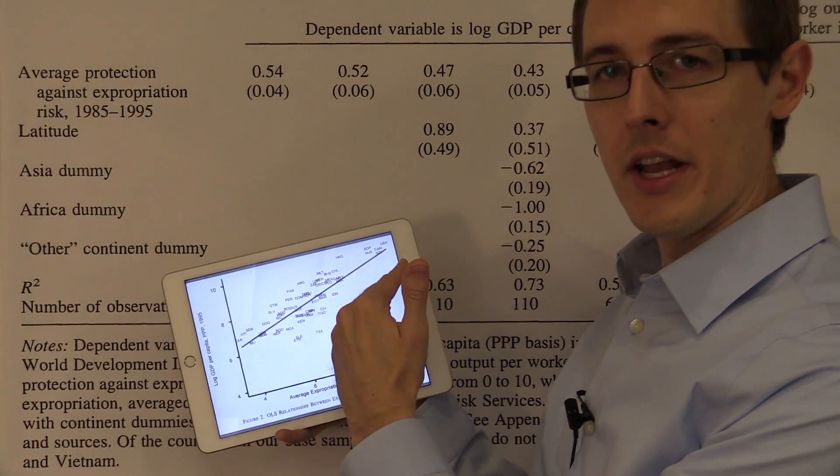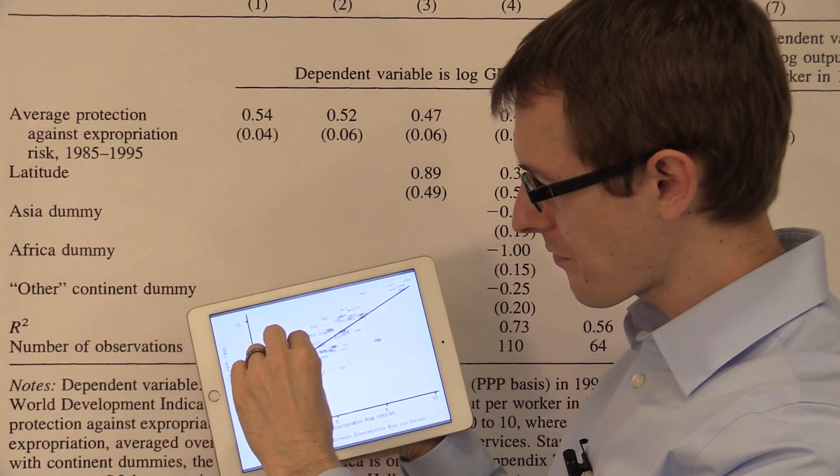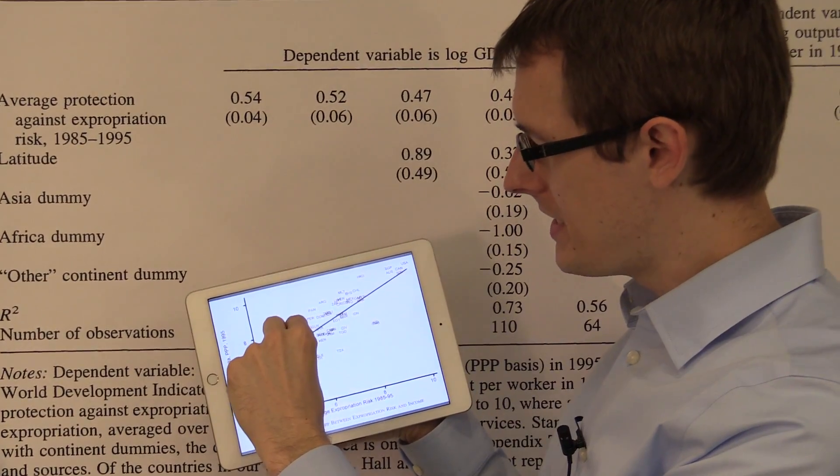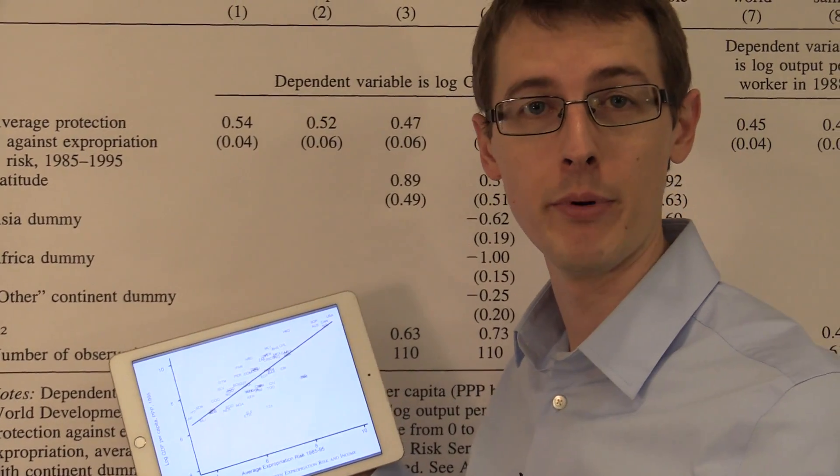Now what you do is you plop down a line, and then for any line you draw, you compute the distance between each data point and that line and square it. That's going to give you a number.